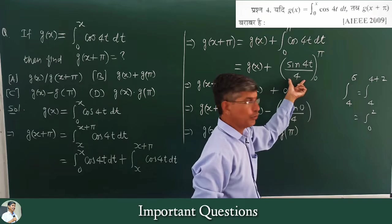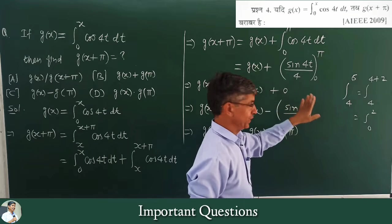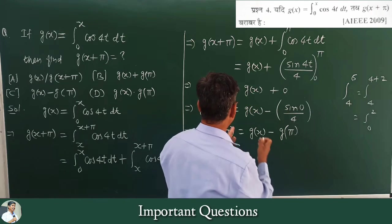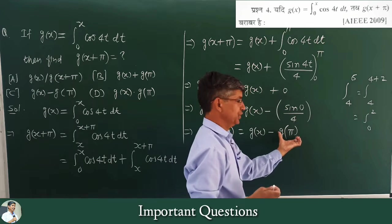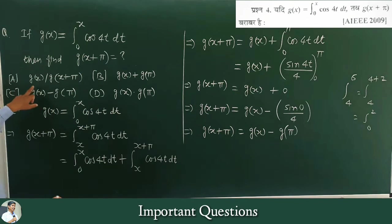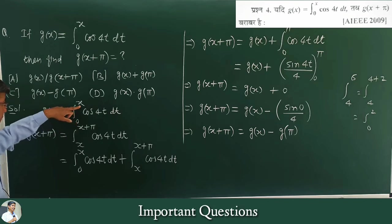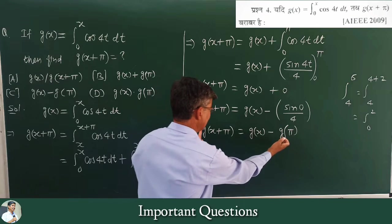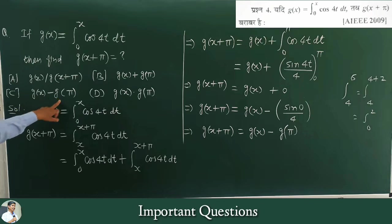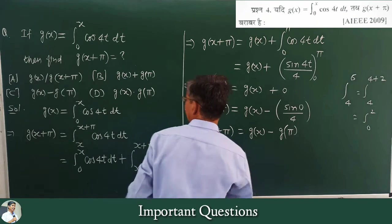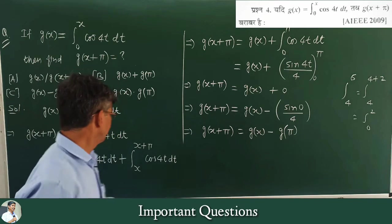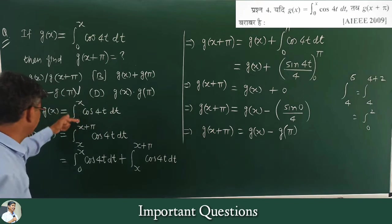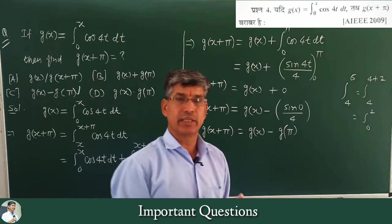The integral of cos(4t) is sin(4t)/4. Evaluating from 0 to π gives sin(4π)/4 - sin(0)/4 = 0. This is the same as g(π) evaluated at 0 to π. Since g(π) = integral from 0 to π of cos(4t)dt and that value is 0, the final result for g(x+π) is g(x) + g(π). This was solved using property P4.